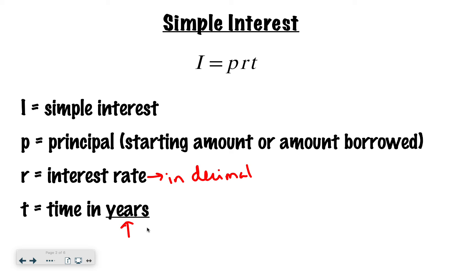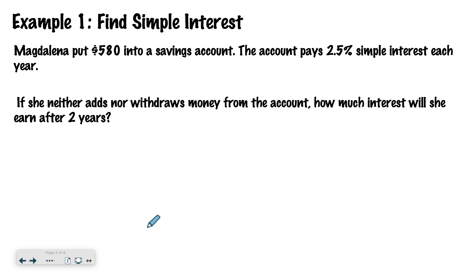We'll look at an example where we're given something other than years. So I'll show you how to convert with that. All right, let's jump into our first example. Example one, we have Magdalena put $580 into a savings account. The account pays 2.5% simple interest each year. If she neither adds nor withdraws money from the account, how much interest will she earn after two years?